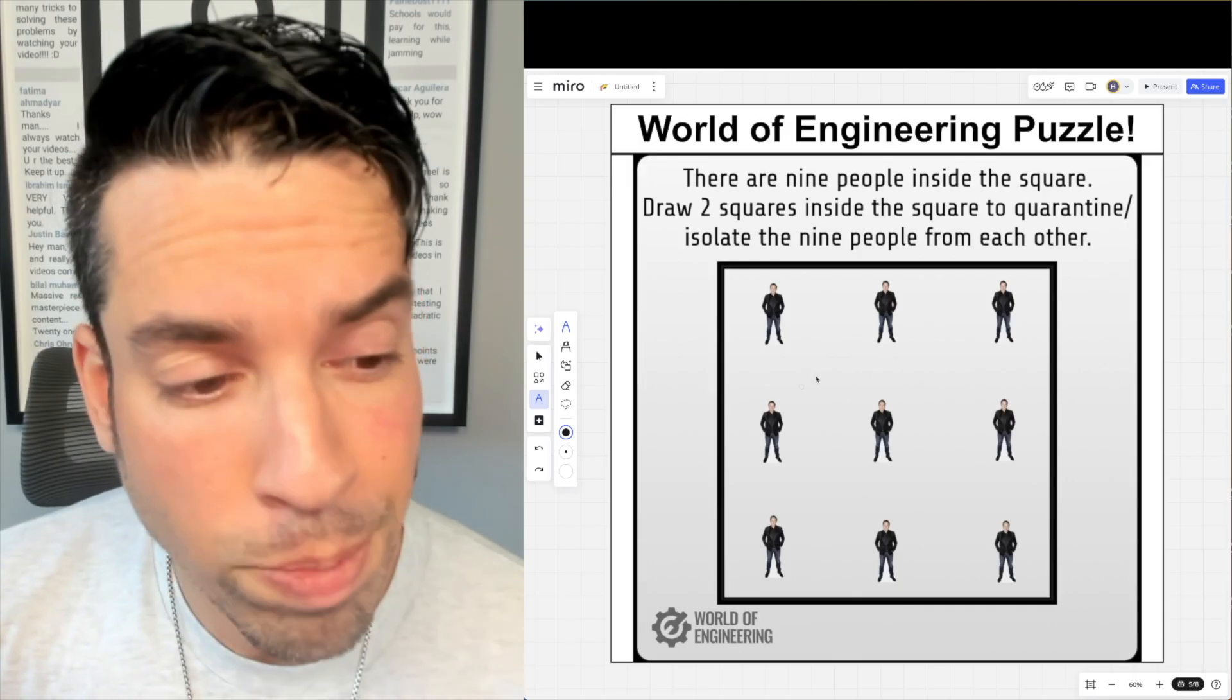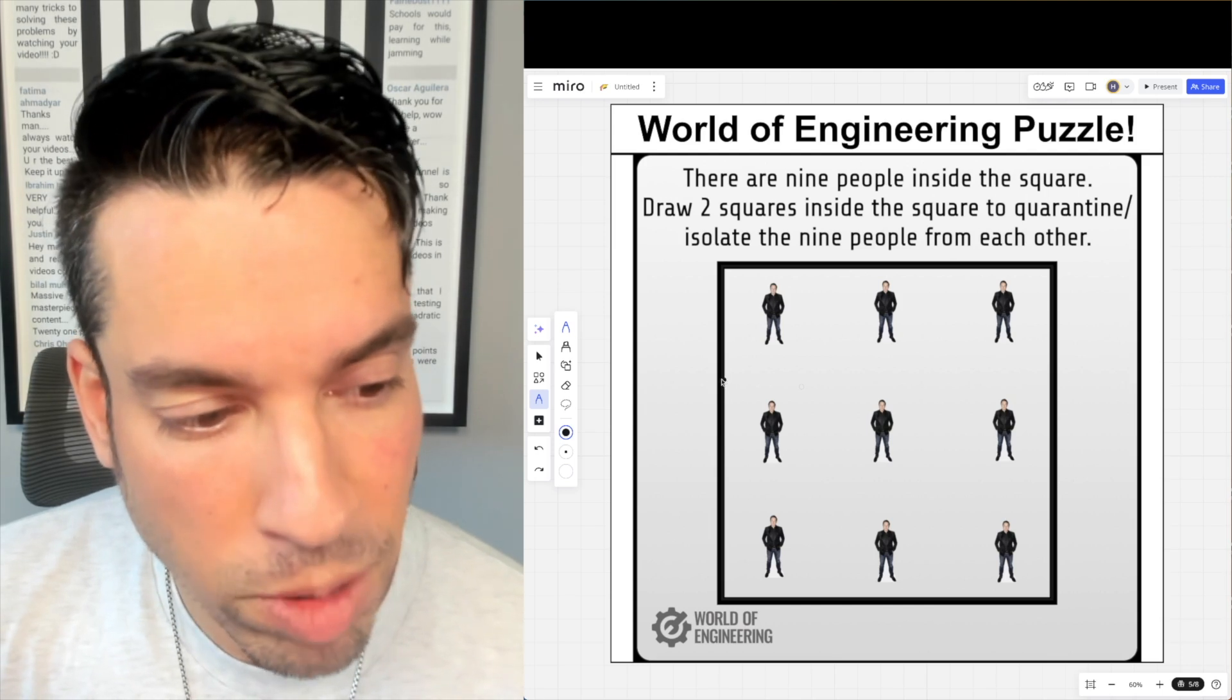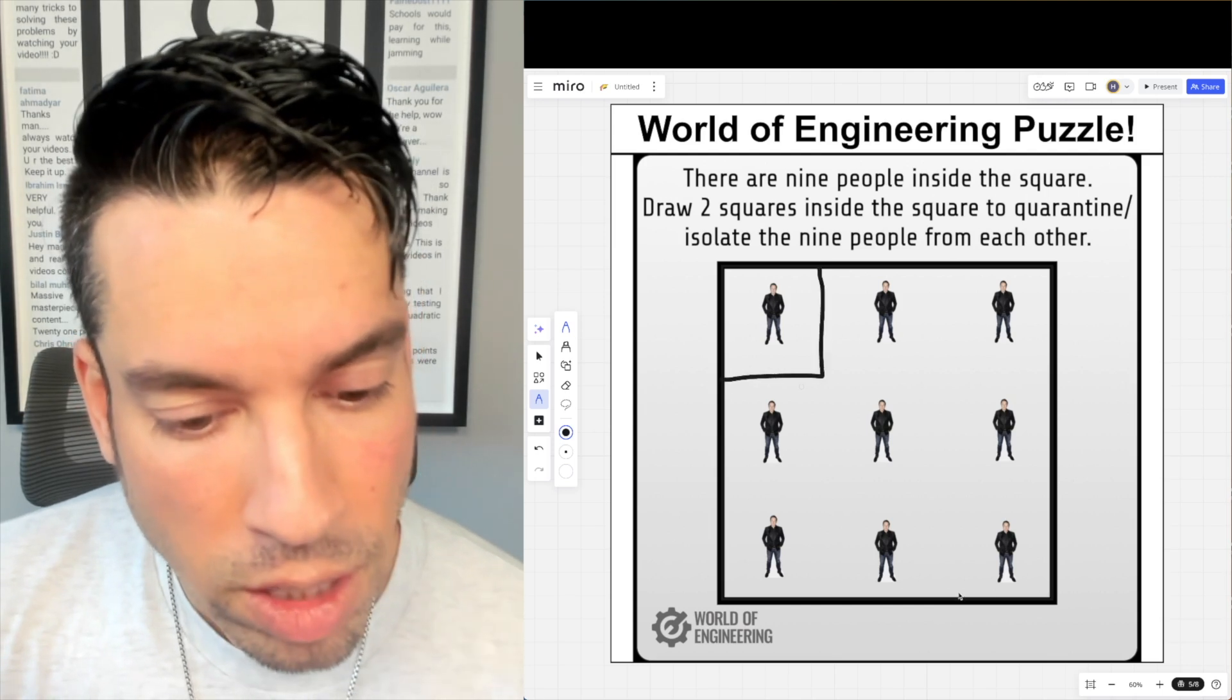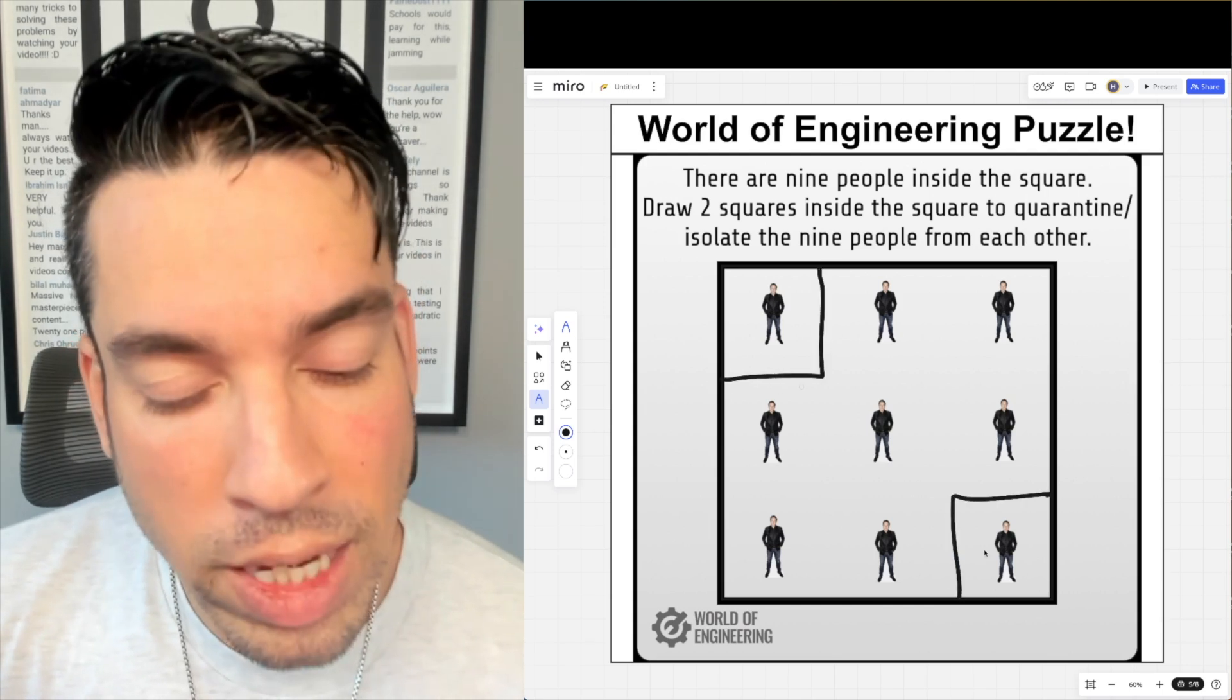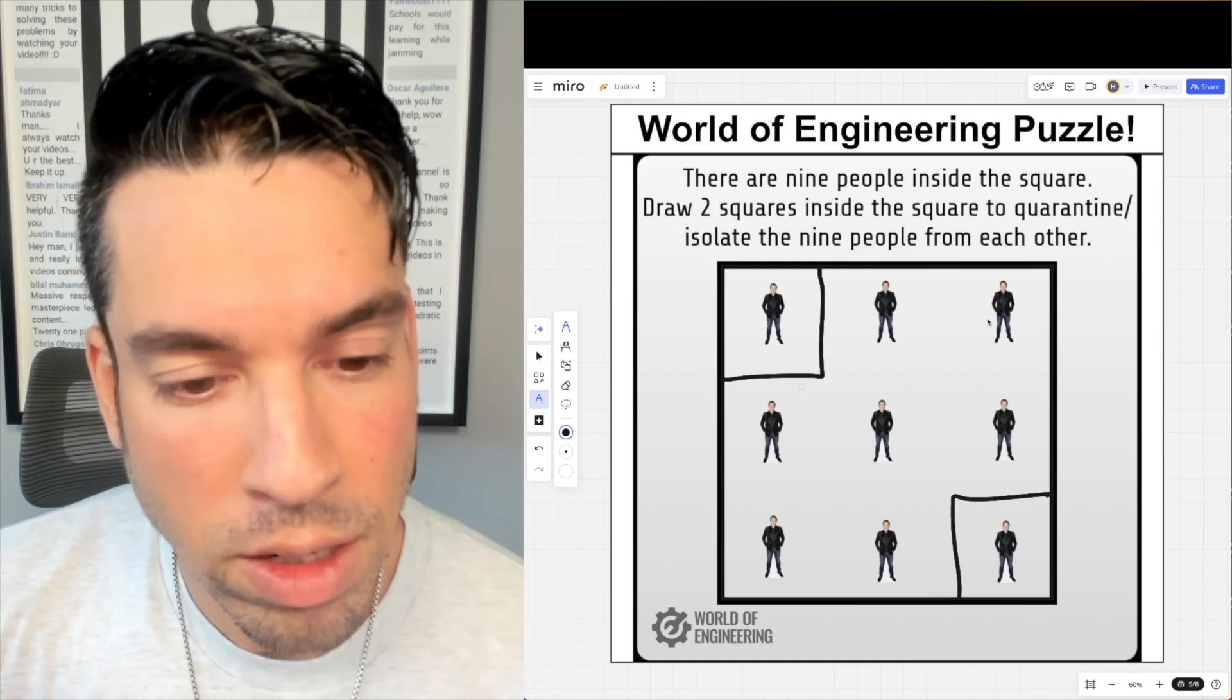So as we start to look at this puzzle, you can see that it's quite difficult. For example, if I draw one square here and I draw one square here, we've only isolated two people and the remaining seven are all still in the same zone.